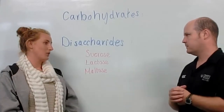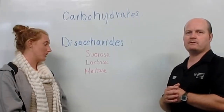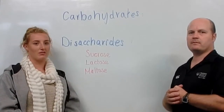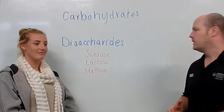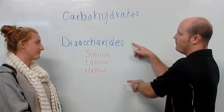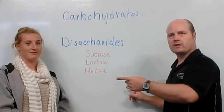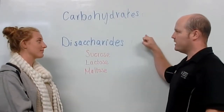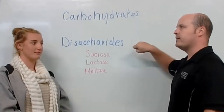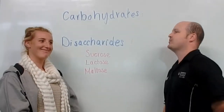And then our last disaccharide is maltose, which is glucose plus glucose. And that is found in cereal, beer, and seeds. So our monosaccharides and our disaccharides are known as simple sugars.